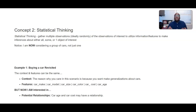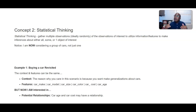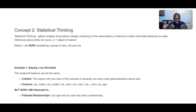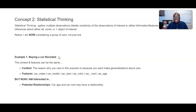Now I'm considering a group of cars rather than just one. Let's go back to the buying-a-car example. The context and the features are still the same. When it comes to these variables, I'm also interested in potential relationships — such as the car's age and its impact on the actual cost of the car. You'd argue the older the car, the cheaper it will be. So these kinds of hypotheses are possible to make at this point.